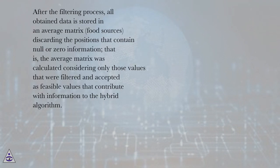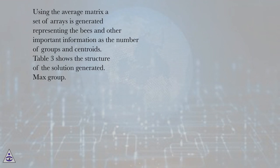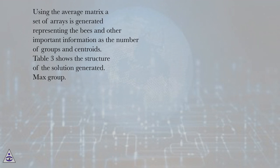After the filtering process, all obtained data is stored in an average matrix as food sources, discarding positions that contain null or zero information. The average matrix was calculated considering only those values that were filtered and accepted as feasible values that contribute information to the hybrid algorithm. Using the average matrix, a set of arrays is generated representing the bees and other important information such as the number of groups and centroids.